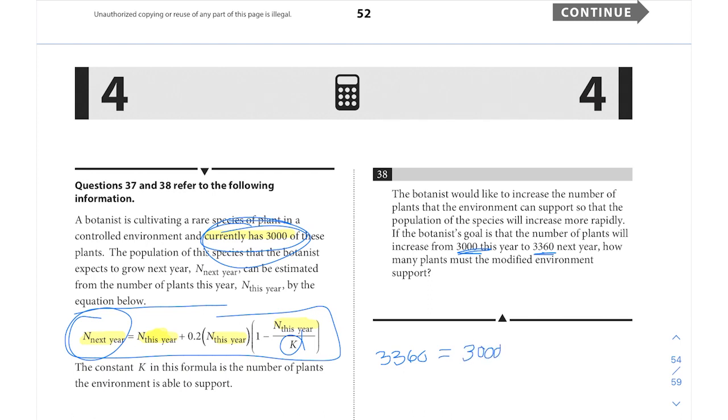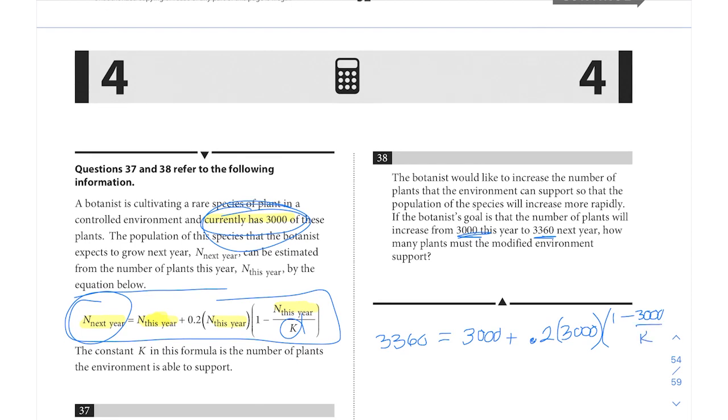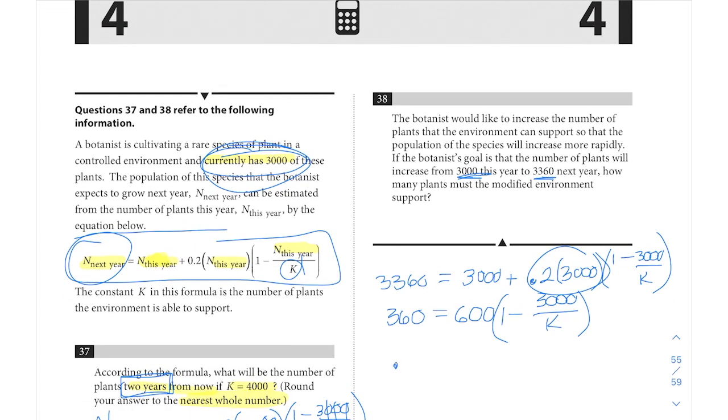Let's see if we can solve for K. Next year should be 3,360. This year is 3,000. We have 3,000 plus 0.2 times 3,000 times 1 minus 3,000 over K. We're going to do simplification here. If you subtract 3,000, you get 360. And 0.2 times 3,000 right here would be 600. So we have 360 equals 600 times 1 minus 3,000 over K. We can continue to simplify from there. 360 over 600 gives us 0.6, or three-fifths, equals 1 minus 3,000 over K.